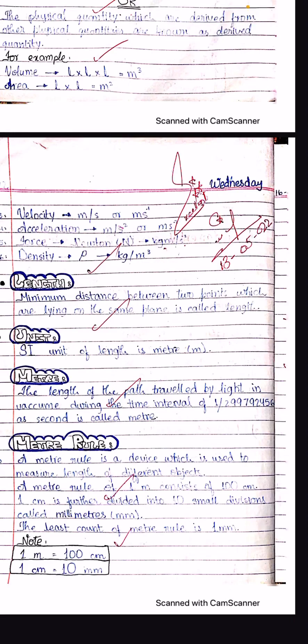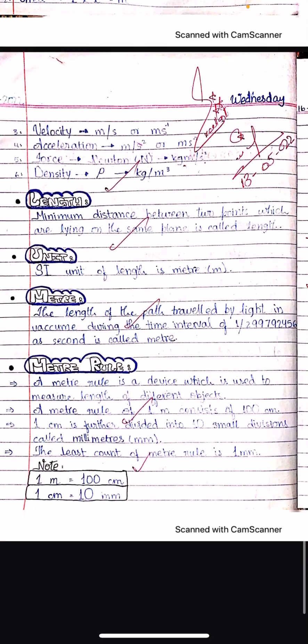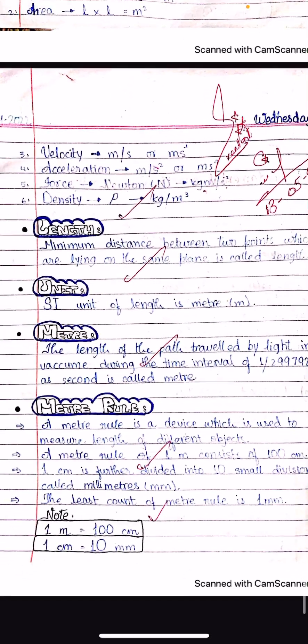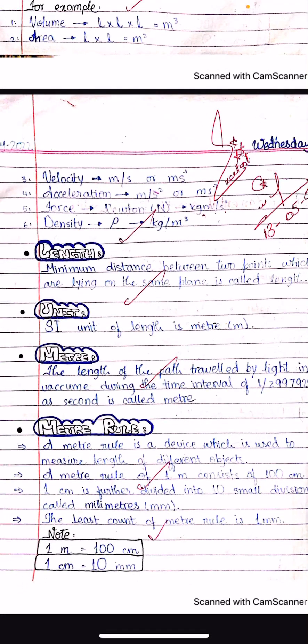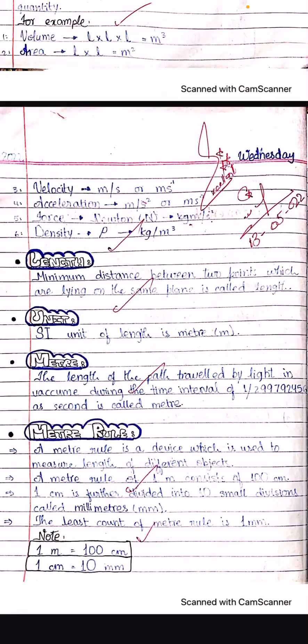That distance light covers equals one meter. A meter rule is a device which is used to measure the length of different objects.